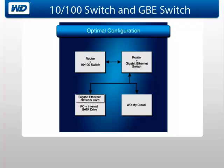Or, if you are using a router with a 10/100 switch, connect the router to a gigabit ethernet switch and connect both the personal computer and network drive to the gigabit ethernet switch. It's okay to connect the 10/100 base-T router to a gigabit ethernet switch as long as all gigabit ethernet devices are connected to the gigabit ethernet switch.